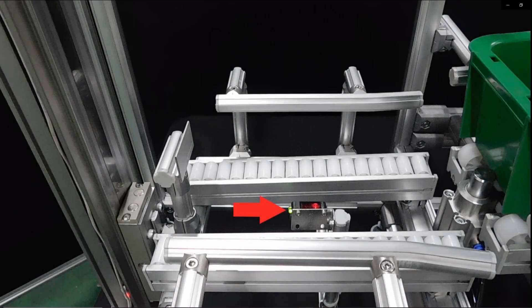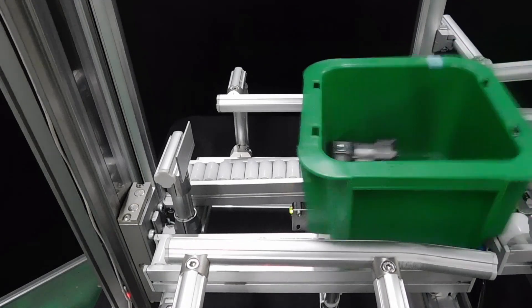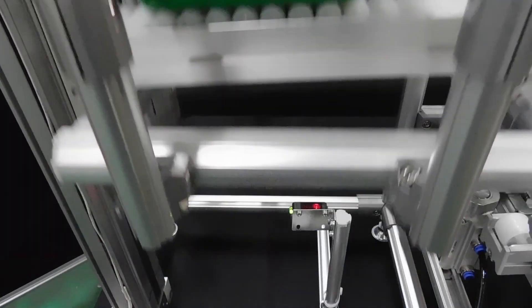Here you can see the photoelectric sensor. When it detects a tote, it tells the SIO controller to activate the air cylinder and raise the table.